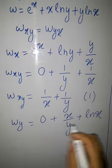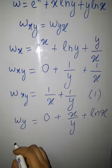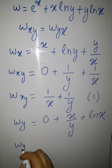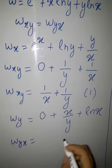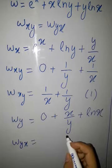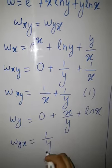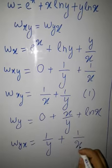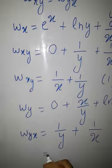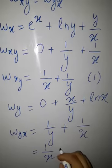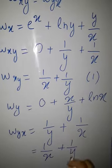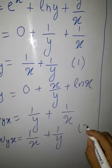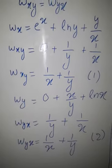Now take the partial derivative with respect to x. We have w_yx: the derivative of x/y with respect to x is 1/y, plus the derivative of ln(x) with respect to x is 1/x. So w_yx equals 1/y + 1/x. Let us call this equation 2.